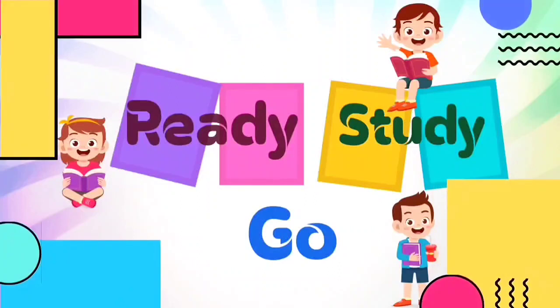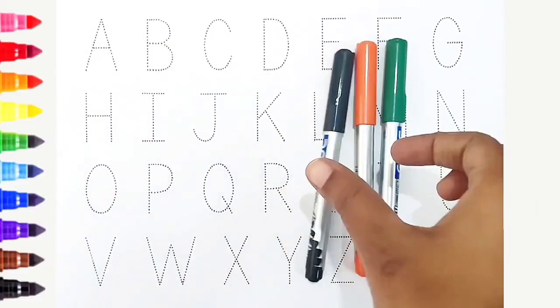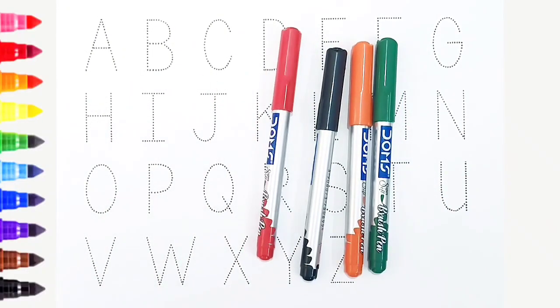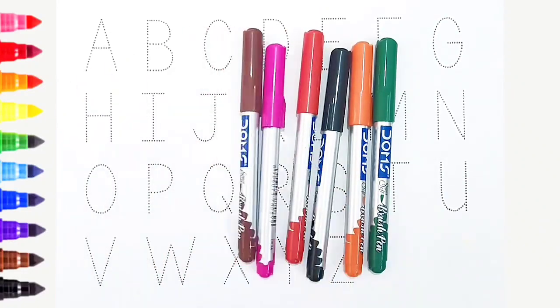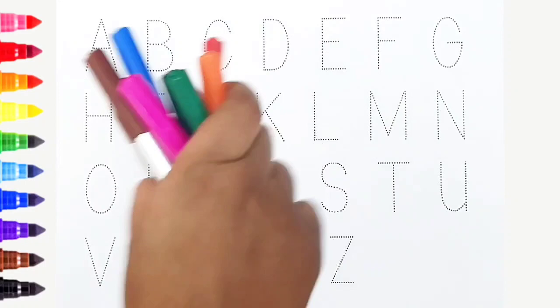Ready, study, go! Green color, orange color, black color, red color, pink color, brown color, blue color. Hi kids, today we can learn the alphabets from A to Z.